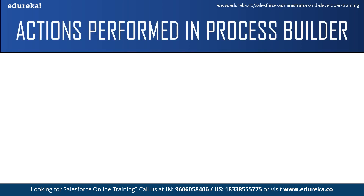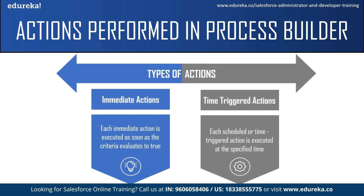Now let's see what are the different actions that can be performed with workflow rules. There are two types of workflow actions which vary with the time they are executed: immediate actions and time-triggered actions. Immediate actions are performed right after the criteria has been met, and time-triggered actions are performed after a time interval — it gives you the liberty to set a time when you want the actions to run, and after that particular time, it checks the criteria and if met, performs the automated actions.